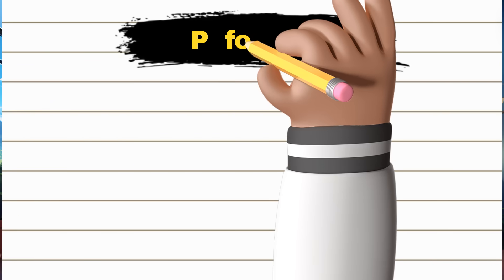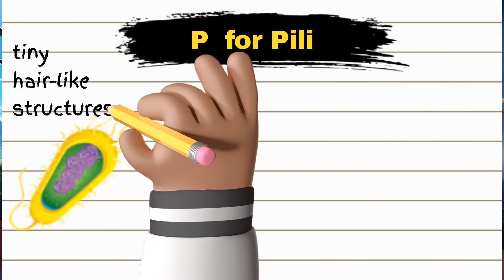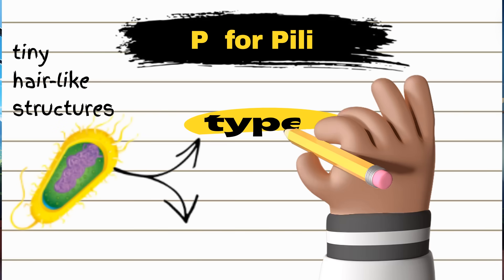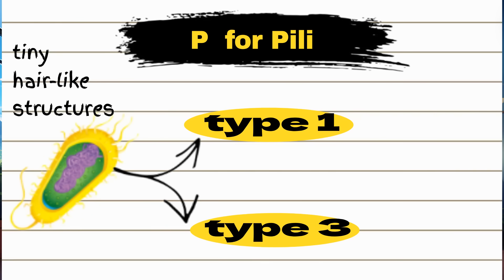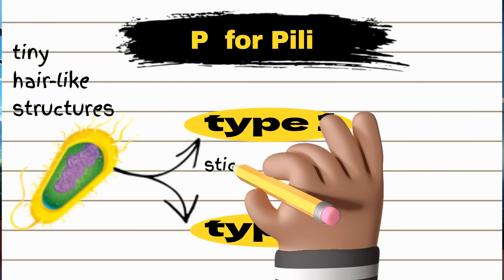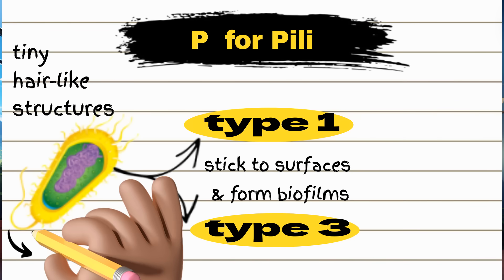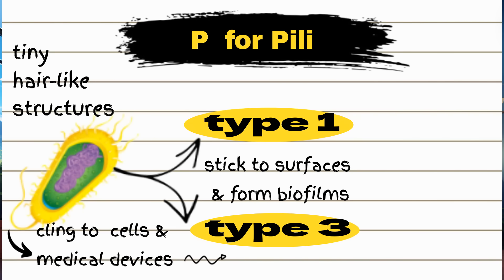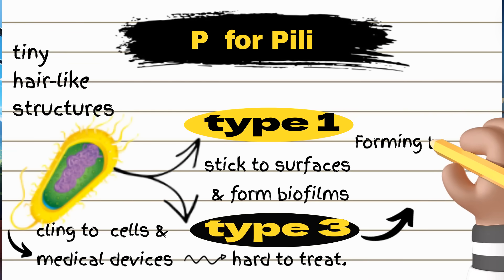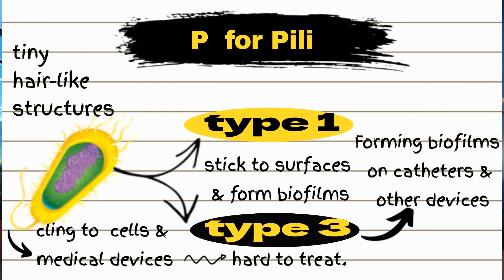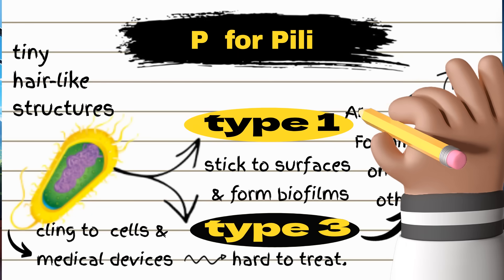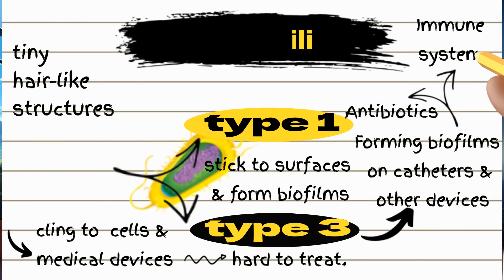Then P is for pili — tiny hair-like structures. There are two types: type 1 and type 3. They help Klebsiella stick to surfaces and form biofilms, which are like bacterial fortresses. These pili help Klebsiella cling to our cells and medical devices, making infections stubborn and hard to treat. The type 3 pili are particularly notorious for forming biofilms on catheters and other devices, protecting Klebsiella from antibiotics and our immune system, making infections harder to clear.